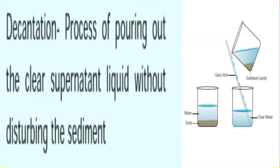Decantation: This process is done after sedimentation. The supernatant liquid is slowly poured out from the container without disturbing the sediment. The part that settles at the bottom of the liquid is called the sediment. The water obtained after decantation is called the decantate. The process of separating liquid above the sediment is called decantation.